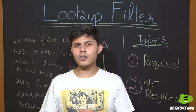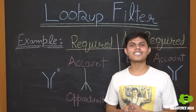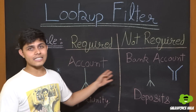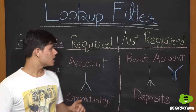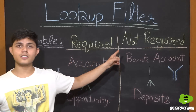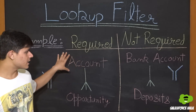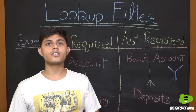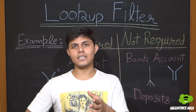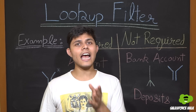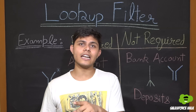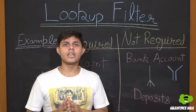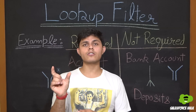Let me give you an example to understand lookup filters very well. I have taken two examples to understand each type. The first one is required and another one is not required. In the required example, there are two objects: Account and Opportunity. Let's take a scenario where you are creating opportunities and you want only active accounts to be available to relate to that opportunity. In that situation, you'll create a lookup filter with a criteria set as account should be active.